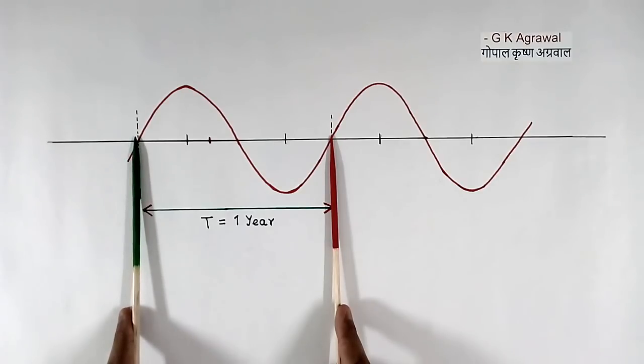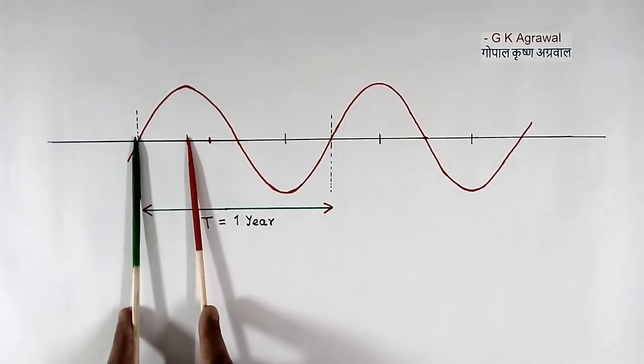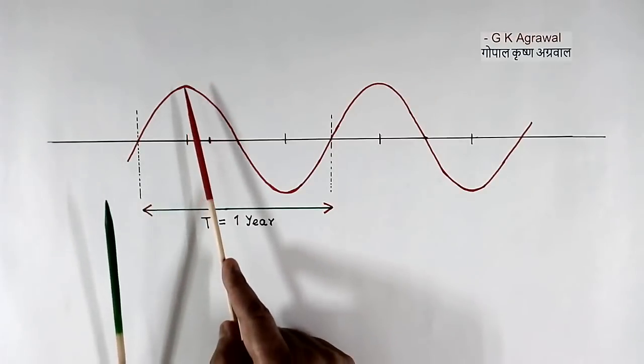So it takes 12 months to complete the cycle. Half cycle will take 6 months and quarter cycle will take 3 months. This means it will take 3 months to reach the voltage from 0 to peak.